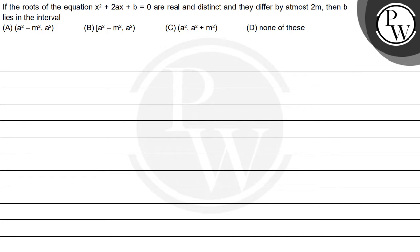Hello with Joe. Let's read this question. So the question is: if the roots of the equation x² + 2ax + b = 0 are real and distinct, and they differ by at most 2m, then b lies in the interval — option a: open interval (a²−m², a²), option b: closed interval [a²−m², a²), option c: open interval (a², a²+m²), and option d: none of these.